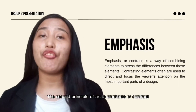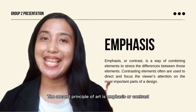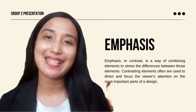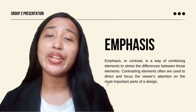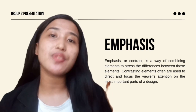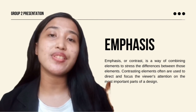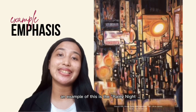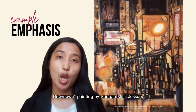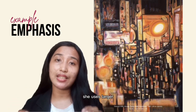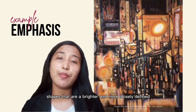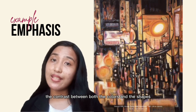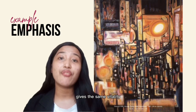The second principle of art is emphasis or contrast. It is a way of combining elements to stress the differences between those elements. Contrasting elements are often used to direct and focus the viewer's attention on the most important parts of a design. An example is the Rainy Night Downtown painting by Georgia Mills Jessop, where she uses larger shapes that are brighter and more loosely defined around the edges, and the contrast between colors and shapes gives the painting a sense of vitality.